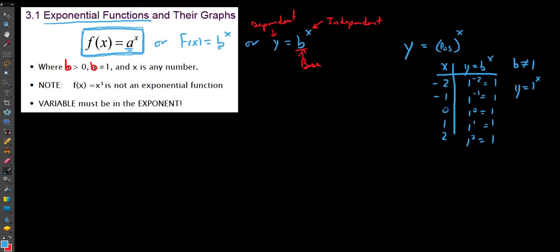Exponential functions are functions where the dependent variable y equals some positive non-1 number raised to the independent variable x — what's changing is the exponent, not the base. For example, f(x) = x³ is not an exponential function because the independent variable x is the base. For an exponential function, we need a fixed base like 3 with the variable up in the exponent.